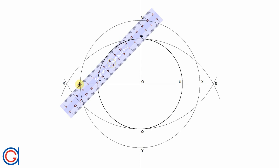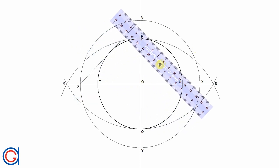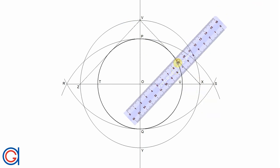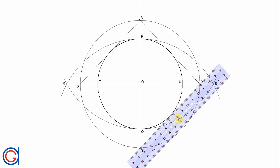So now with our ruler we are going to join these four vertices. Z to V, V to X, X to Y, and finally Y to Z.